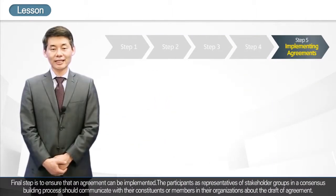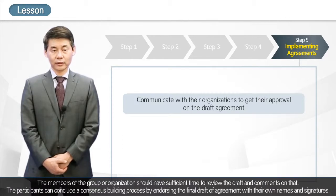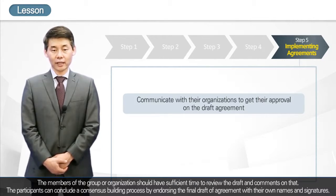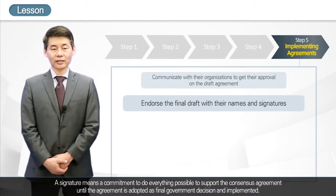The final step is to ensure that an agreement can be implemented. Participants, as representatives of stakeholder groups, should communicate with their constituents or members about the draft agreement. Members should have sufficient time to review the draft and comment on it. Participants can conclude a consensus-building process by endorsing the final draft of the agreement with their own names and signatures. A signature means a commitment to do everything possible to support the consensus agreement until it is adopted as a final government decision and implemented.